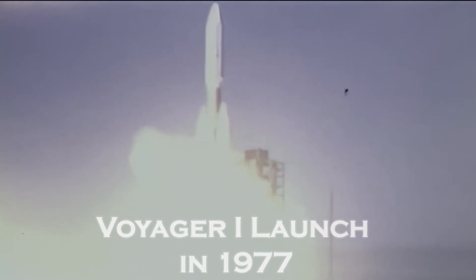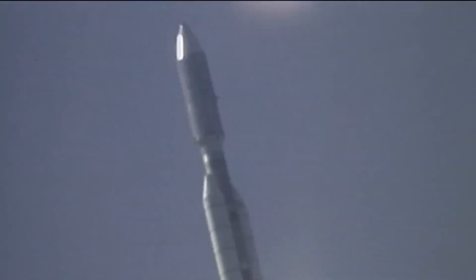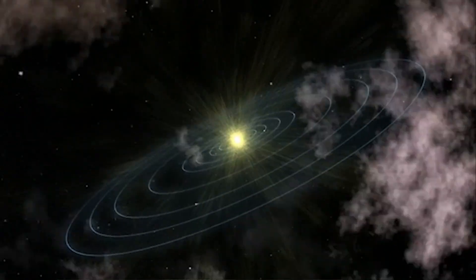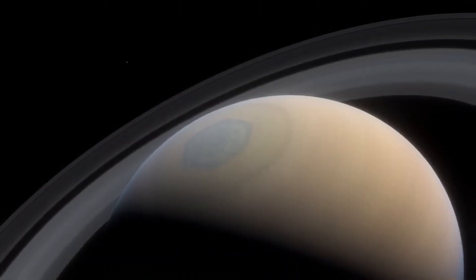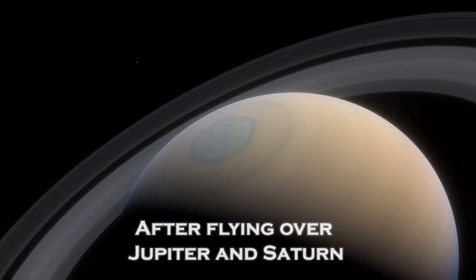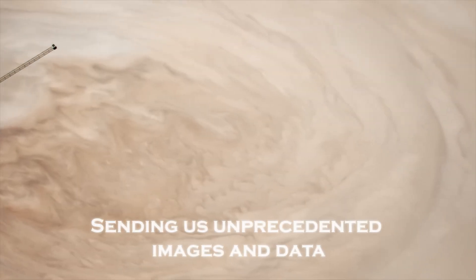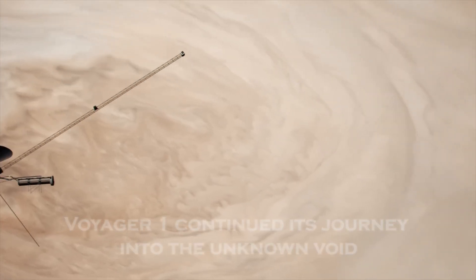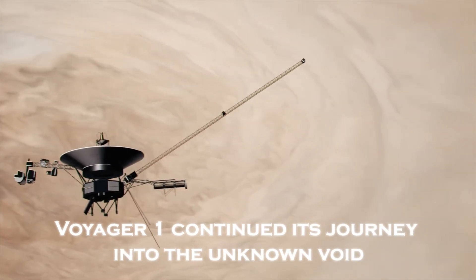Launched in 1977, Voyager 1 had a clear mission: to explore the outermost planets of our solar system, collect data, and one day perhaps cross that invisible boundary that separates our solar system from interstellar space. After a flyby over Jupiter and Saturn, sending us unprecedented images and data, Voyager 1 continued its journey into the unknown void.